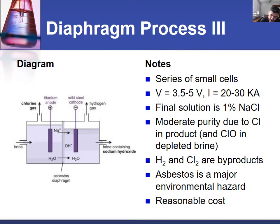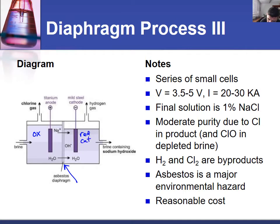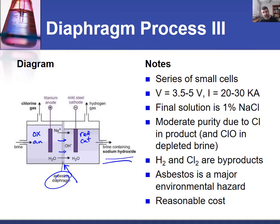Notice this time it's just a single cell, split in the middle by a diaphragm. That diaphragm separates the two half-cells where both oxidation and reduction are occurring. The titanium anode where oxidation occurs is on the left as you're looking, and reduction occurs at the cathode on the right. The sodium ions migrate through the asbestos diaphragm from the oxidation half-cell into the reduction half-cell, so when we pump out the solution, there is a higher concentration of sodium hydroxide present.